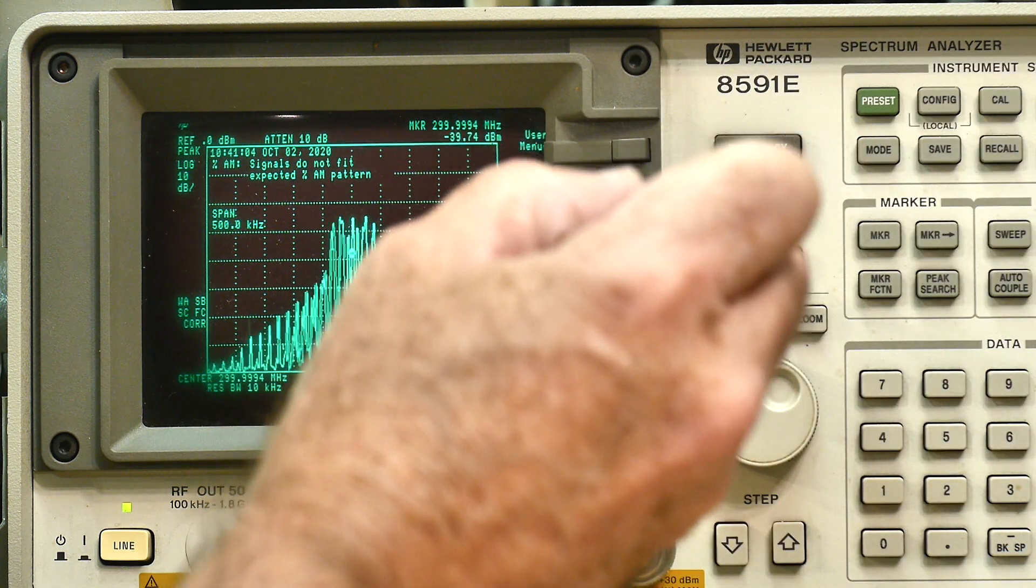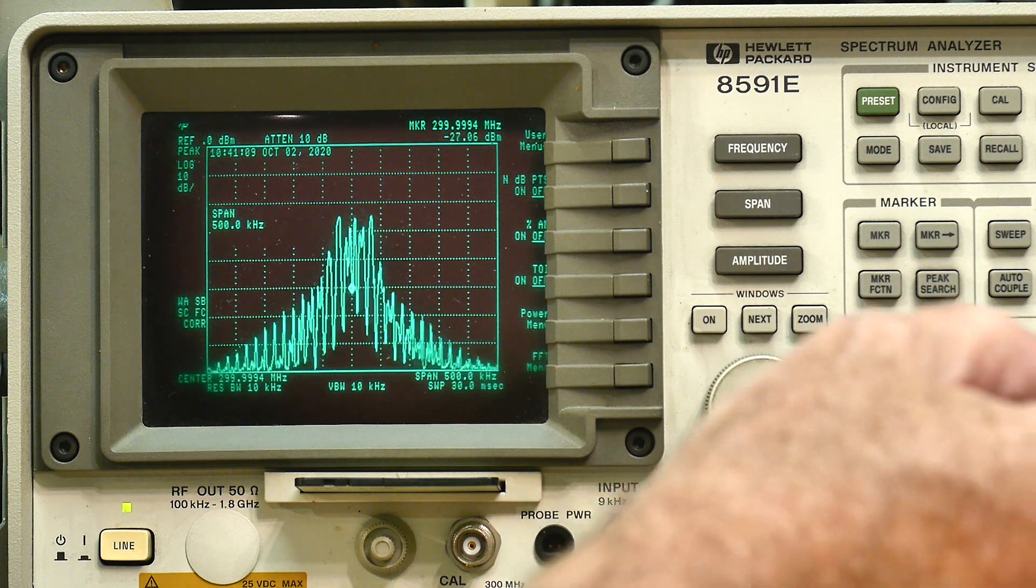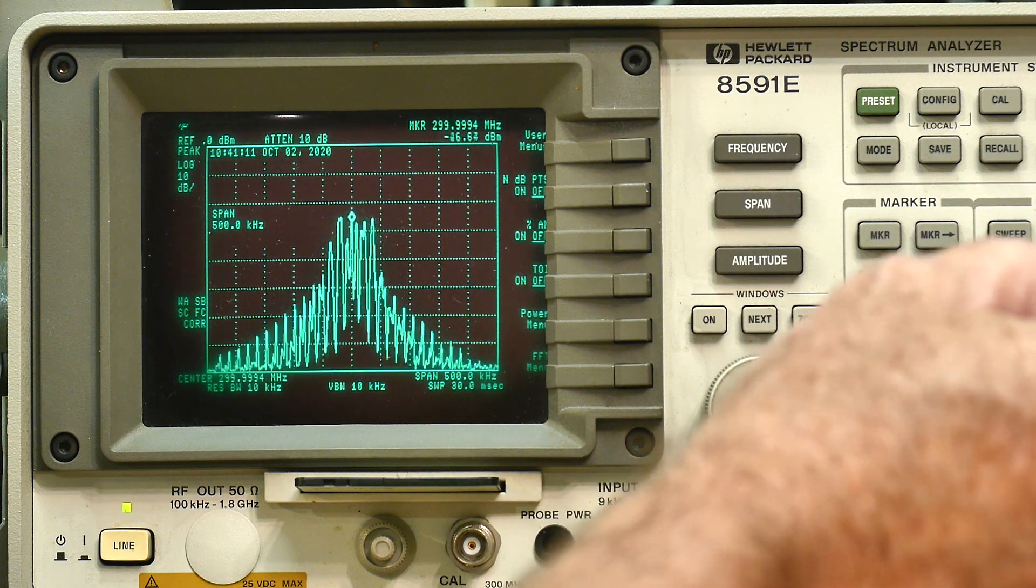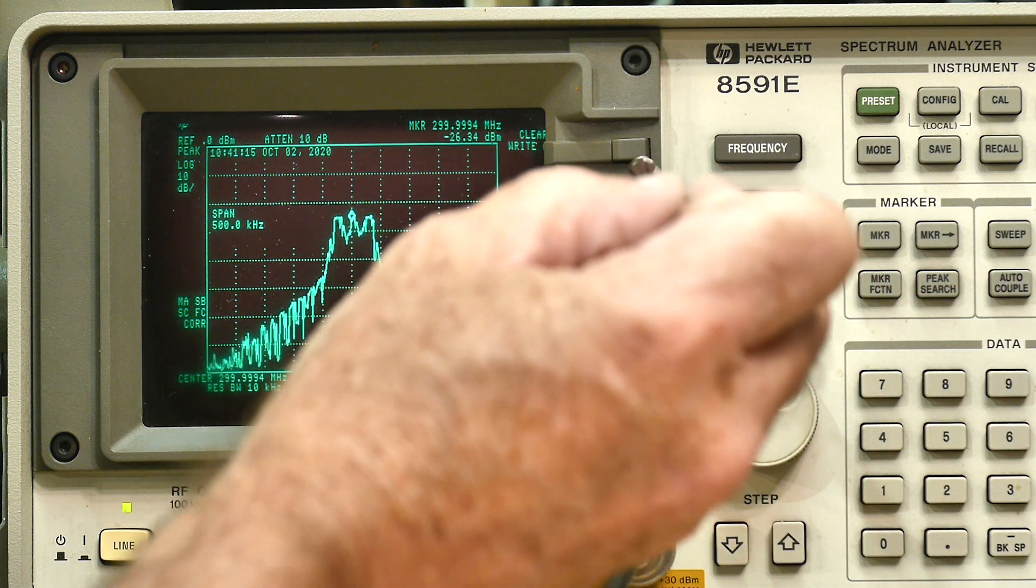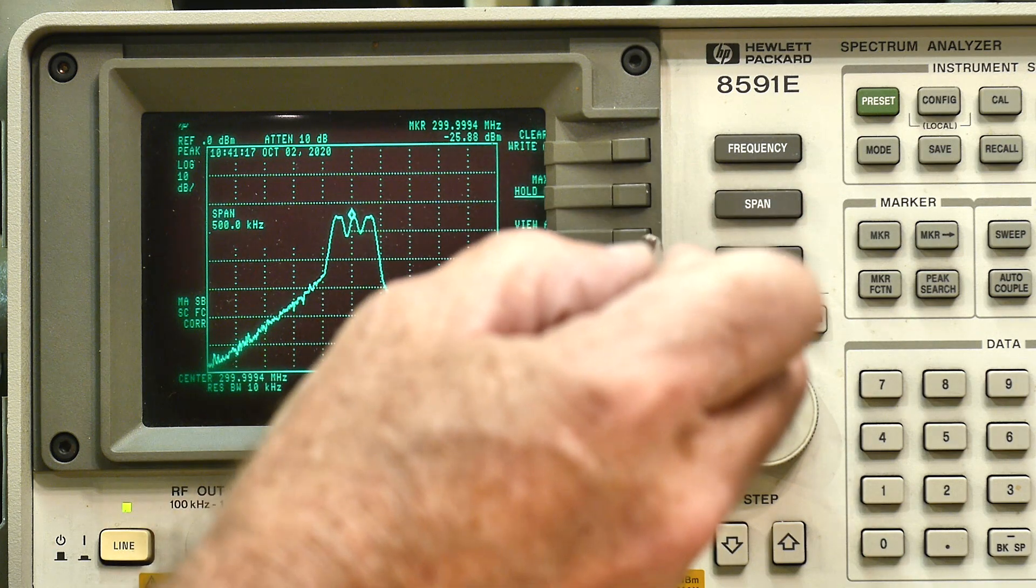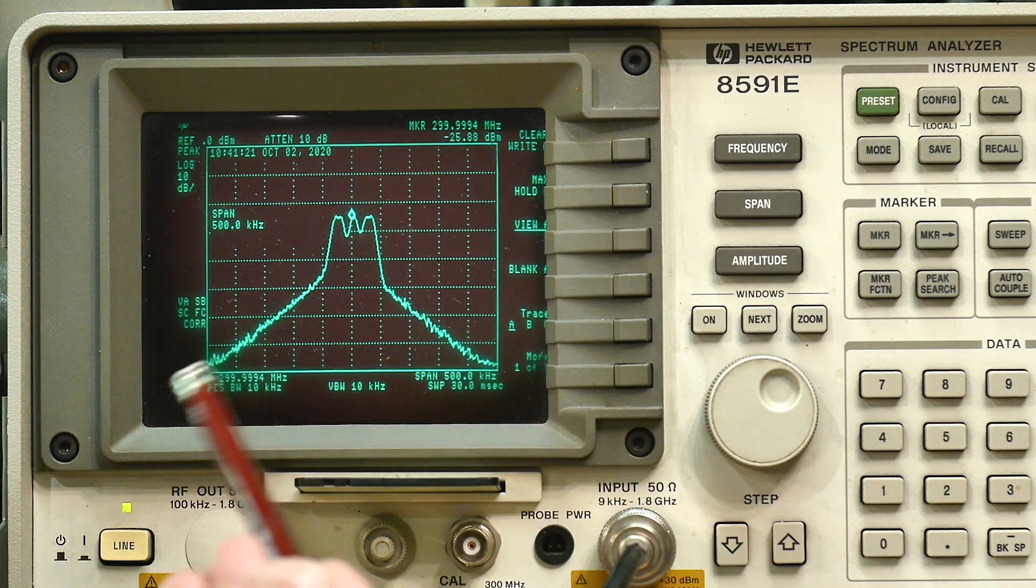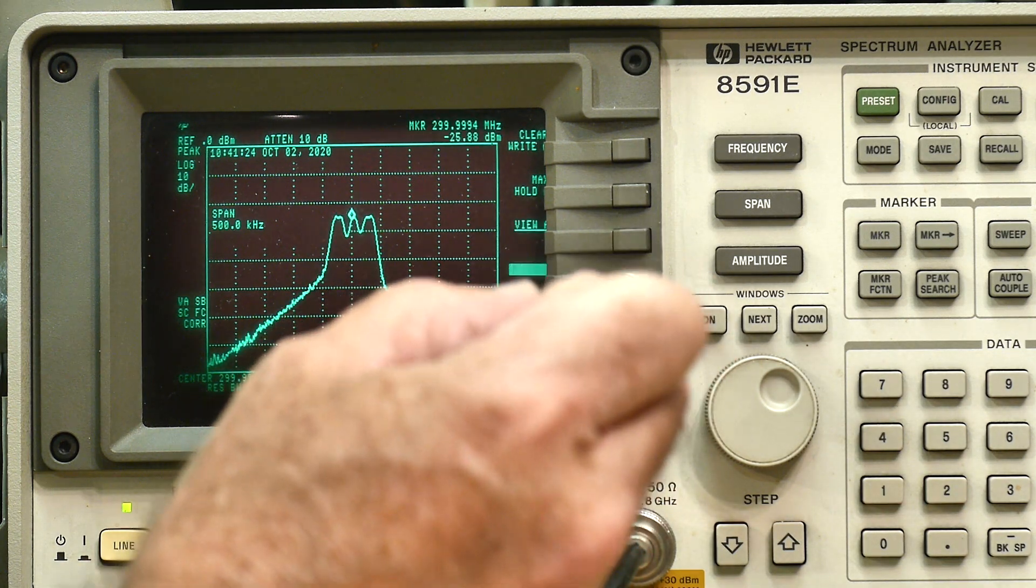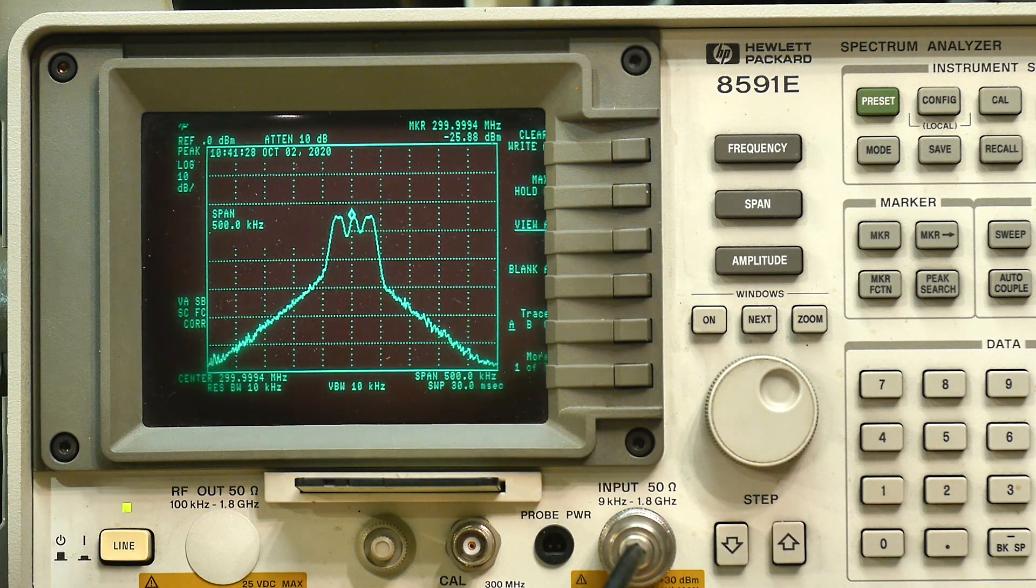Let's go ahead and say we want to capture this envelope. First of all we need to turn off the AM modulation measurement, and now we need to say trace and max hold, and then it builds up. Then we can just say view which is hold so we can view it.